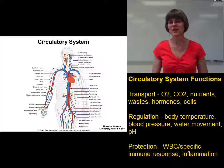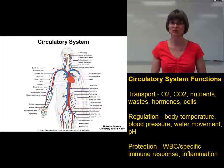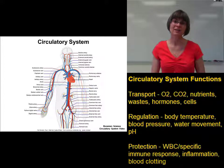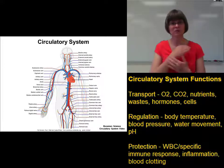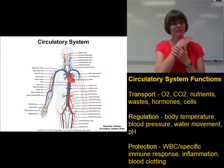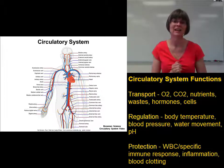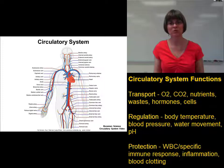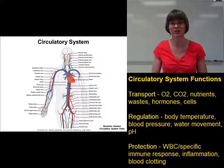Another important protection function of the circulatory system is clotting. Blood clotting is important for protection in two ways: first, it blocks openings in the skin so that pathogens can't get in, and second, it keeps blood from getting out so you don't lose fluids and become dehydrated or anemic.